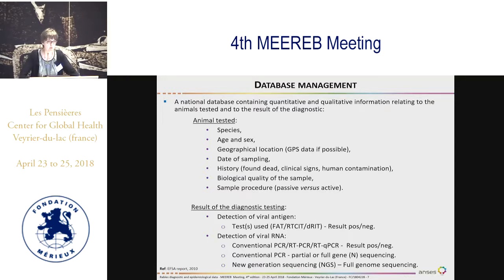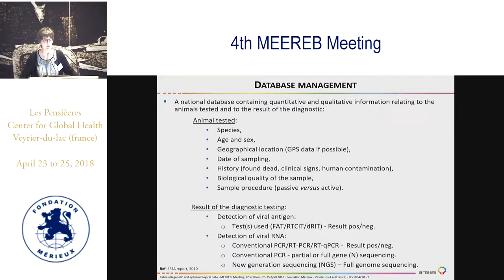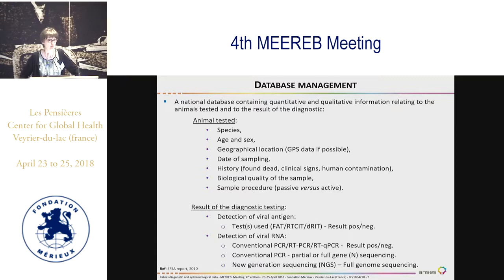As soon as we have tested the samples for rabies diagnosis, it is very important to have a database to store all the data. You can have a very simple database with an Excel file or a sophisticated one. The database should contain information related to the animal tested: species, age, sex, geographical location if possible, date of sampling, the history — which is very important — human contamination such as bite, the biological quality of the sample, and also the sampling procedure. The results of the diagnostic technique should, of course, be reported in the database.